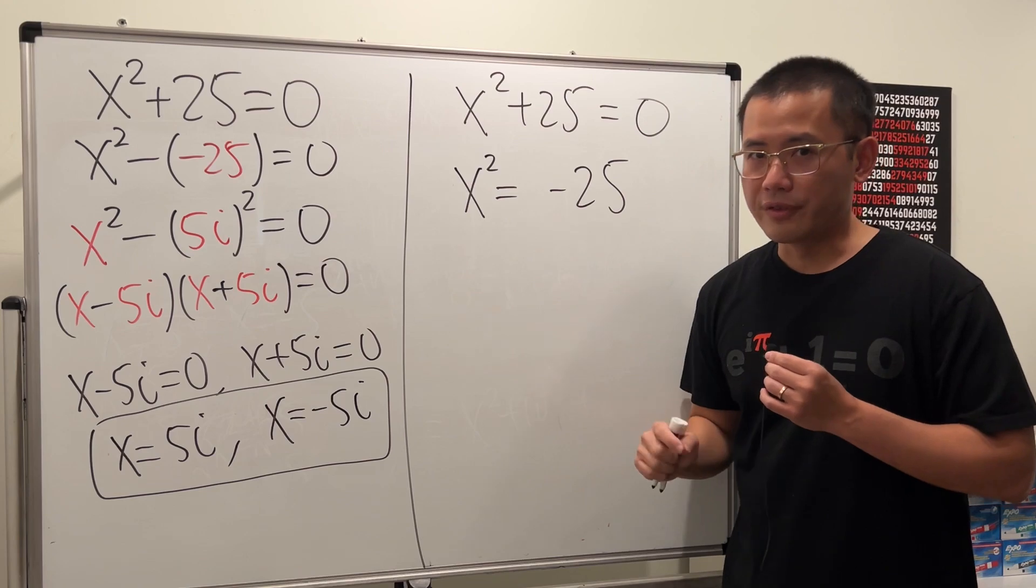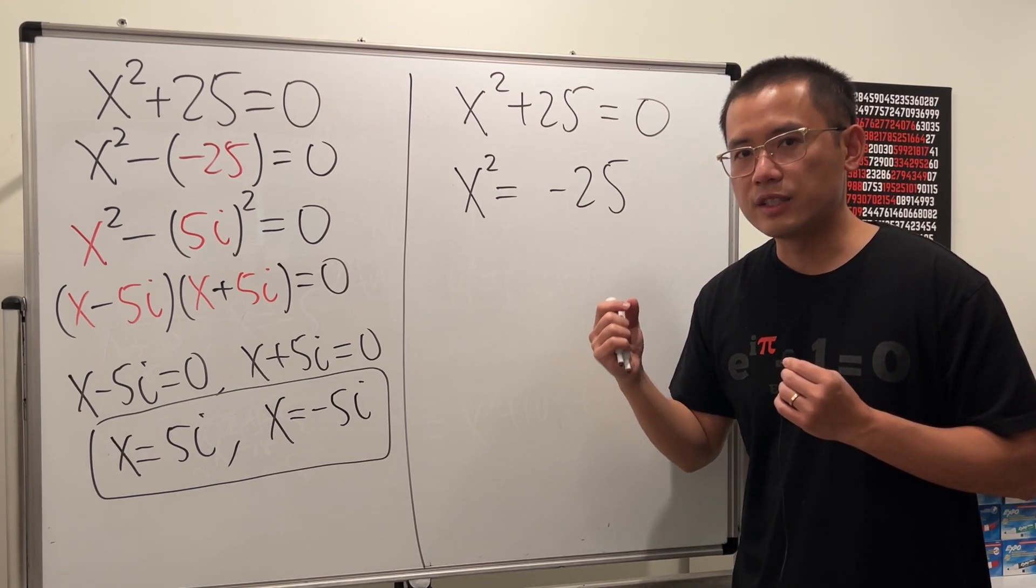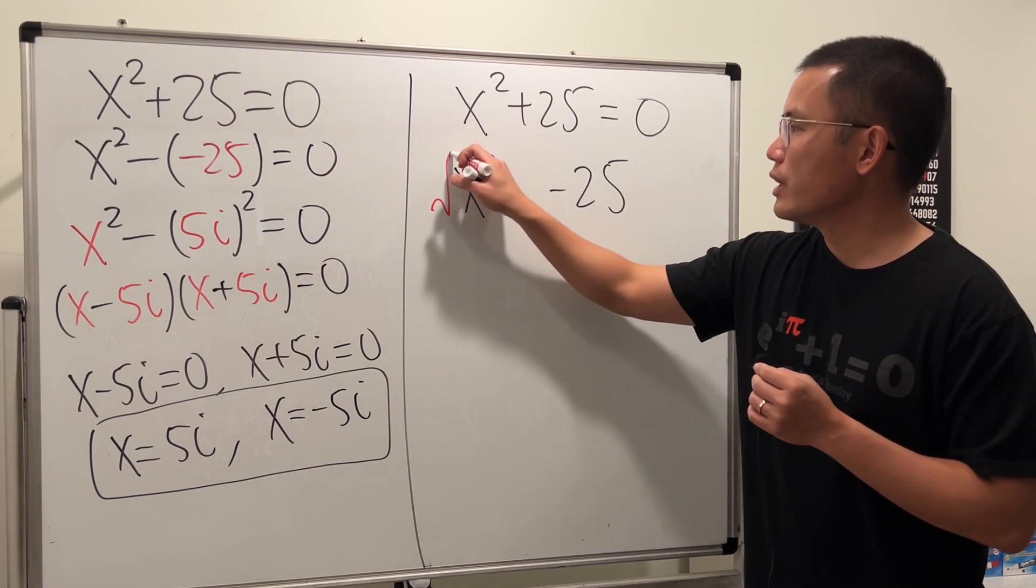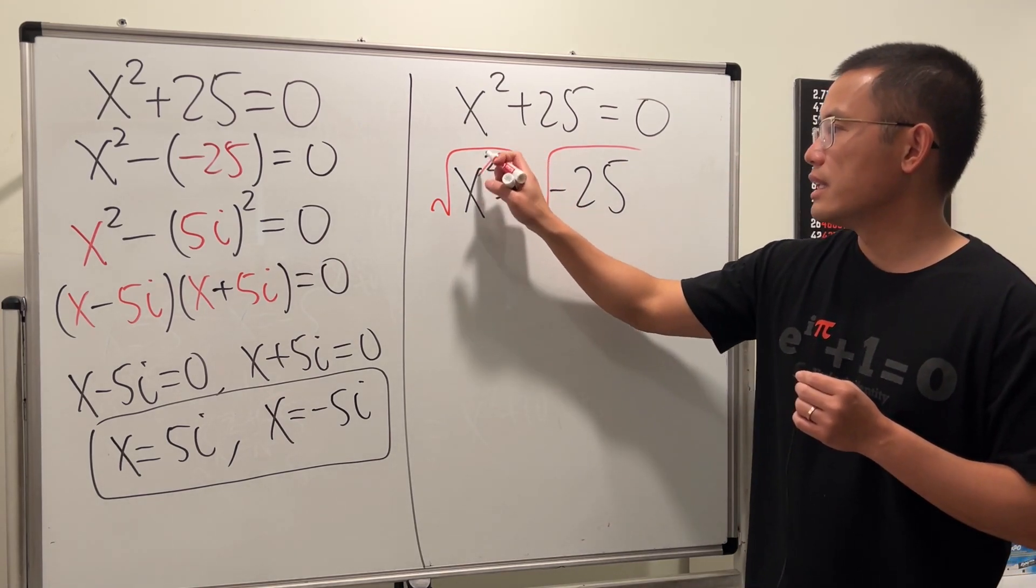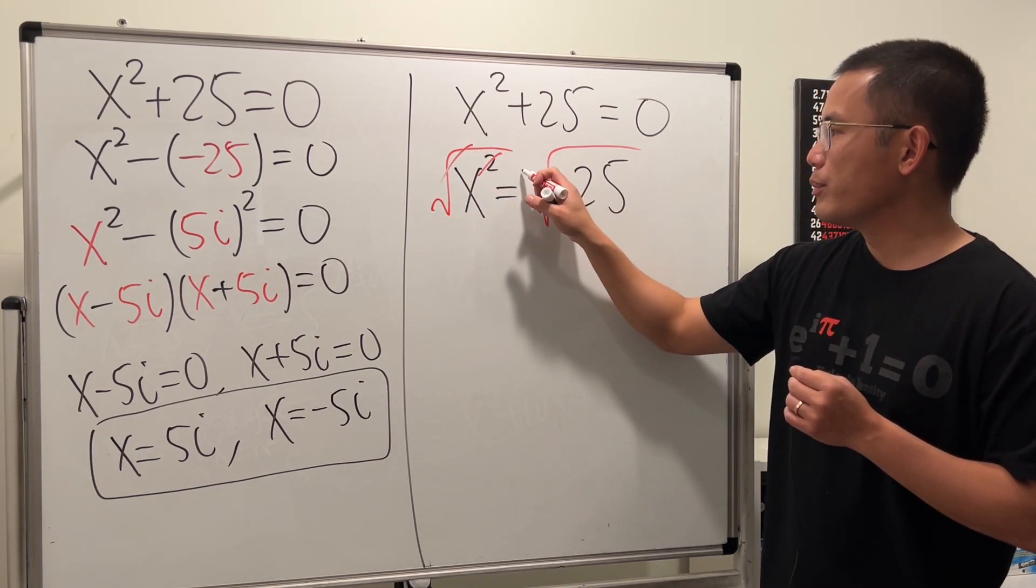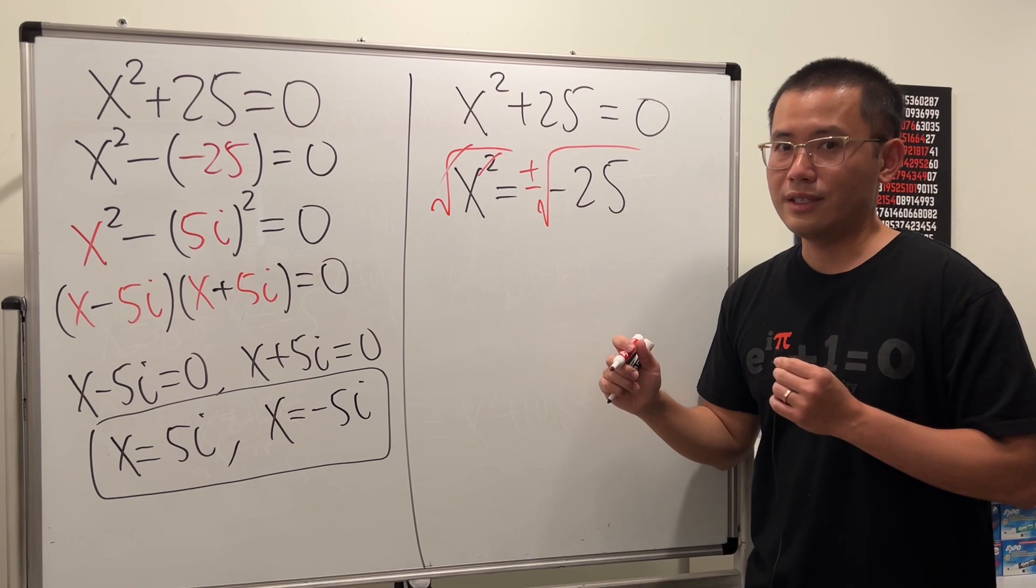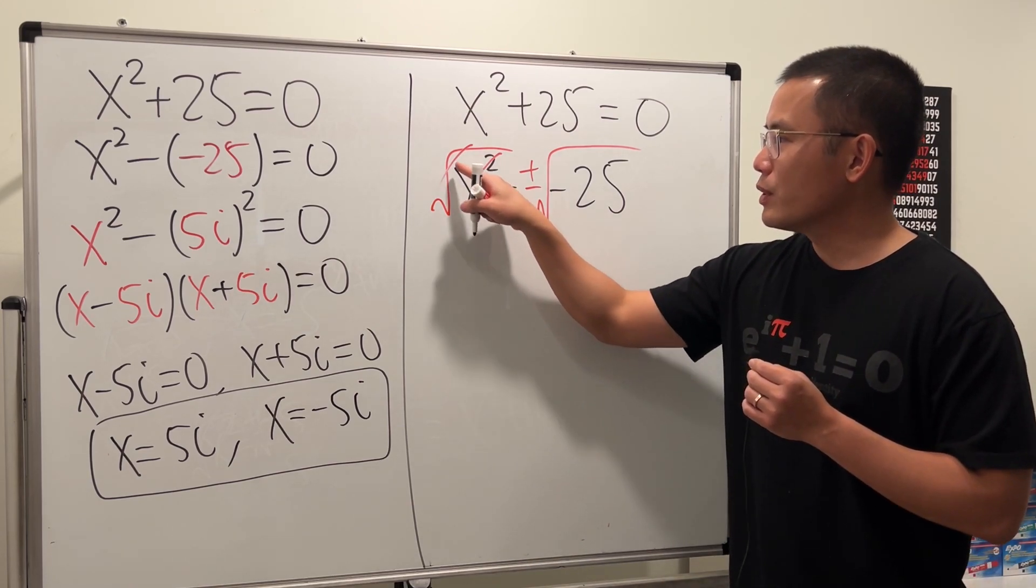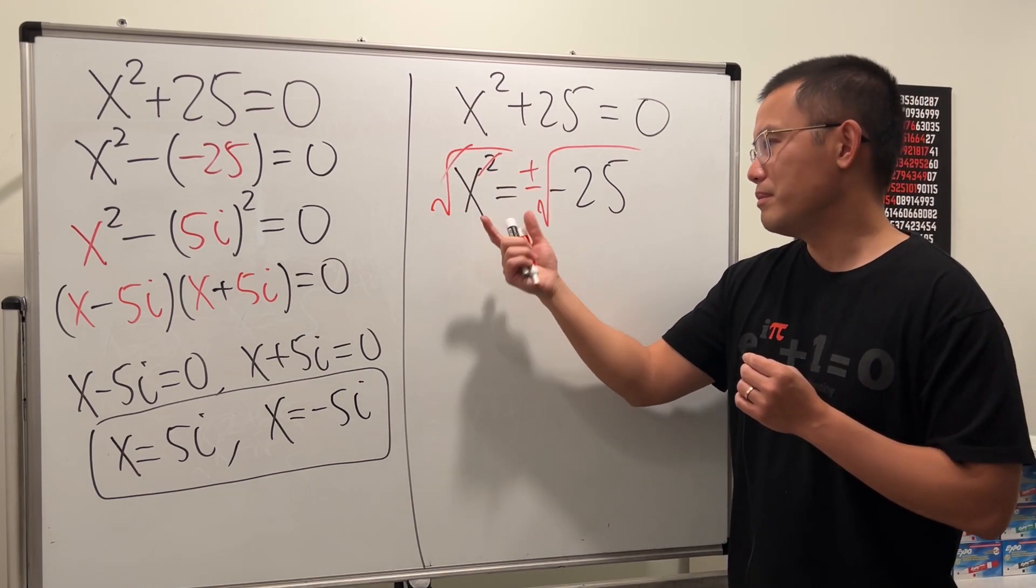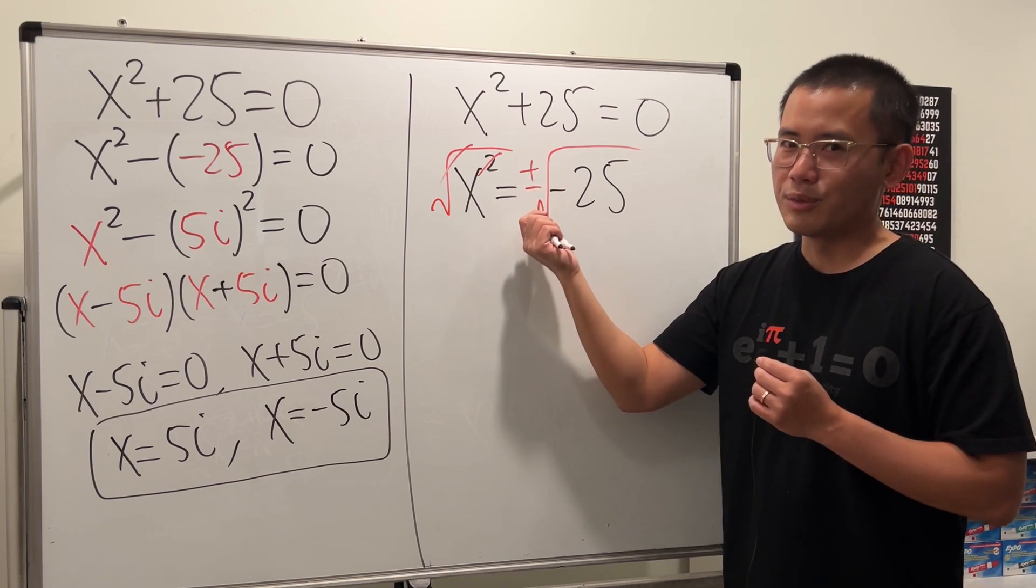Then we have to get rid of the square. We can do so by taking the square roots to both sides. So do it here, do it here. And this and that will cancel. And you just have to put a ± on the right hand side. Some people will say put the absolute value here, but it's easier to just put a ± on the right hand side.